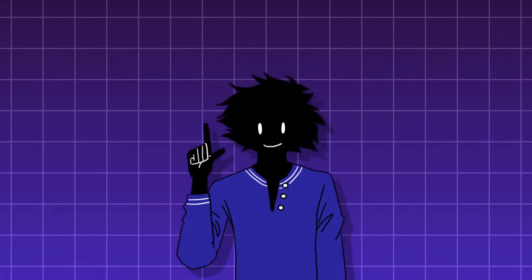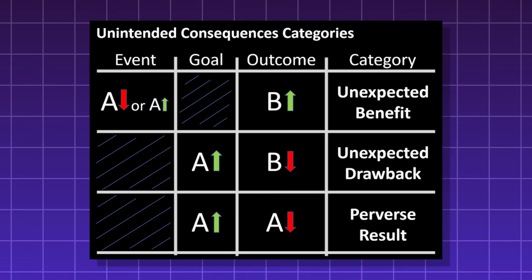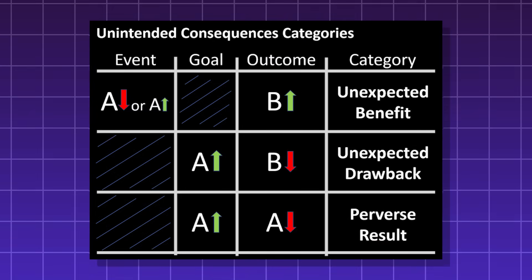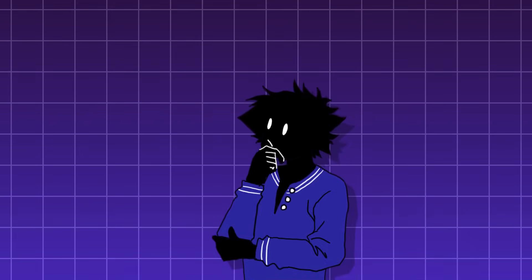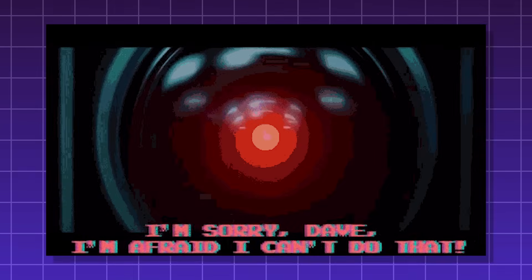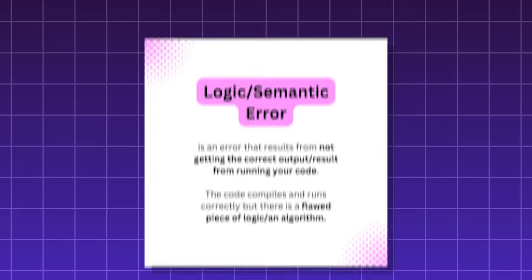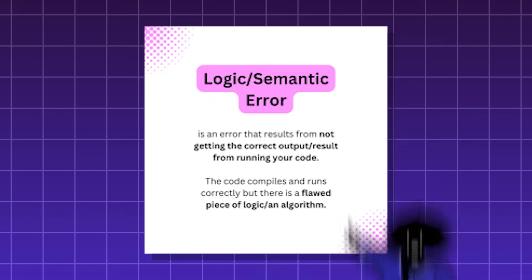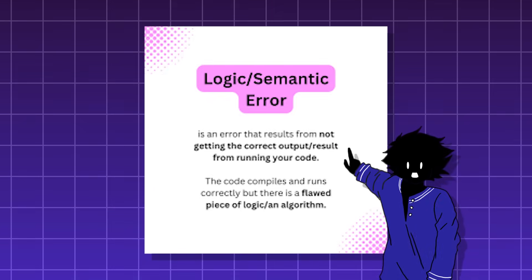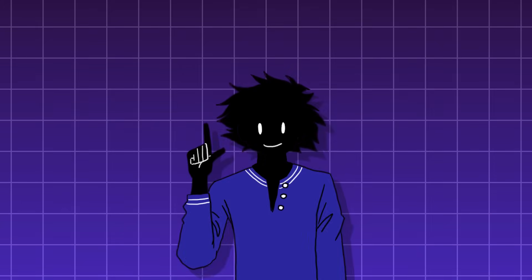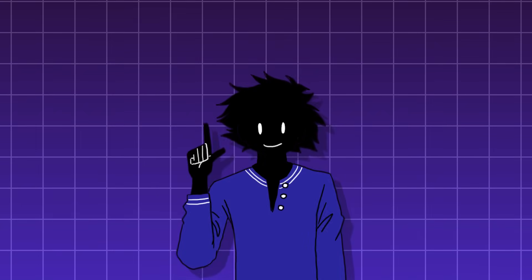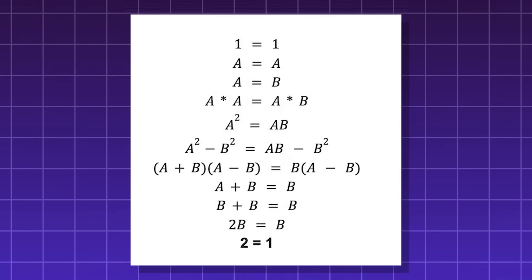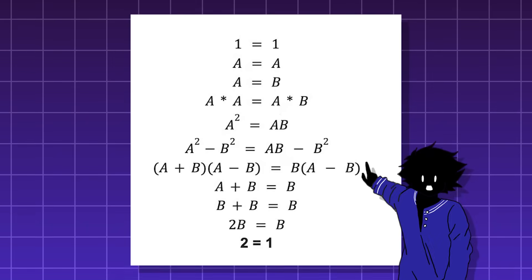Semantic errors are caused by the program doing something that does not align with the intention of the programmer. There are no syntax errors and the program runs fine, but it doesn't do what you want it to do. This may seem very similar to logic errors — in fact, the terms are used interchangeably a lot. But the main difference is that a logical error is a flaw in the algorithm or business logic, meaning the code executes a plan but the plan itself is flawed from the start.